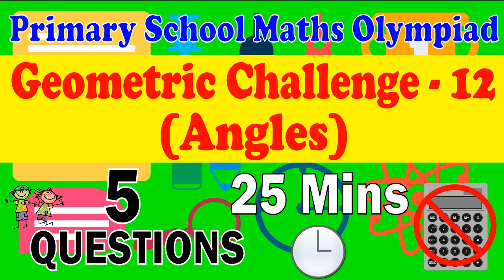Primary School Math Olympiad Geometric Challenge 12: Angles. This is a challenge for Primary School Math Olympiad for questions related to geometry for angles. There are five questions. The challenge is to complete them within 25 minutes. If you can't achieve it the first time, do not be disheartened. With practice, if one works hard and revises this challenge multiple times, one should be able to complete this challenge within 25 minutes.